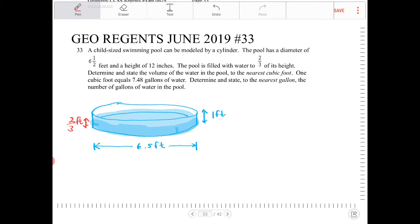So anyway, we take the volume formula for a cylinder, and that's V = πr²h.